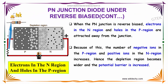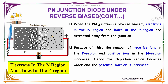When the p-n junction is reverse biased, electrons in the n region and holes in the p region are attracted away from the junction. Because of this, the number of negative ions in the p region and positive ions in the n region increases. Hence, the depletion region becomes wider and the potential barrier is increased.